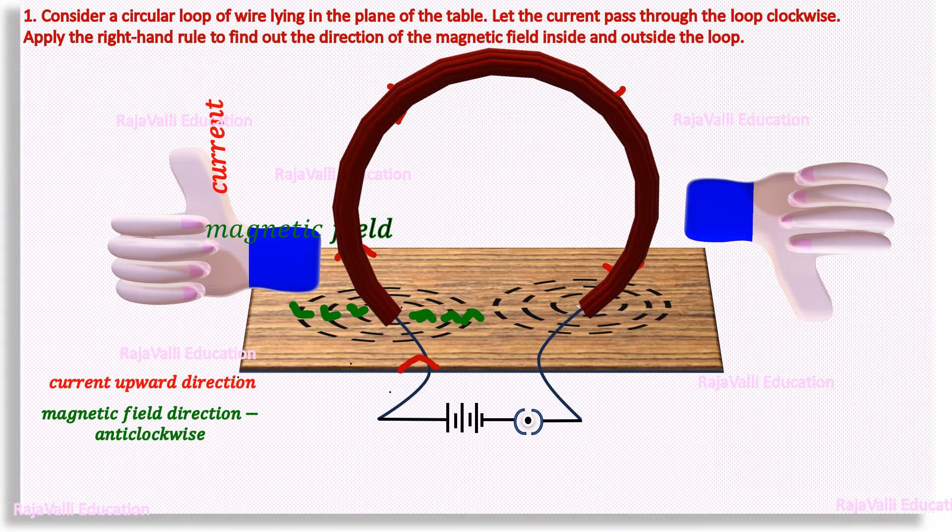For that, we have to keep the thumb of the right hand towards downward direction since the current is in downward direction. Here, the direction of the current is as the direction of the thumb. Then the direction of the magnetic field lines are as the direction of other fingers. So, the magnetic field lines are in clockwise direction since the current is in downward direction.